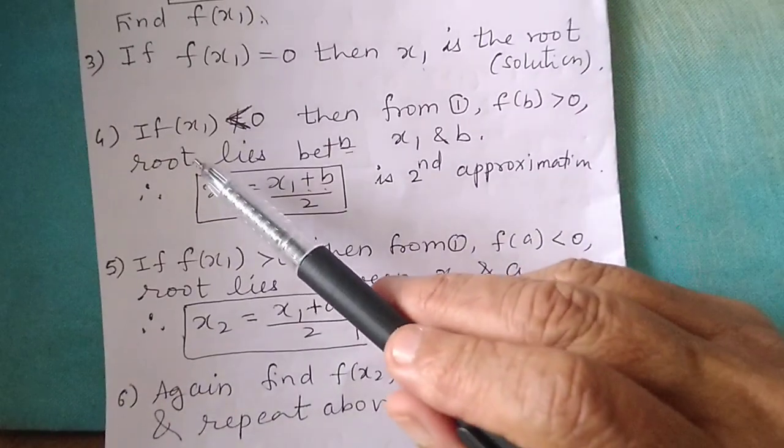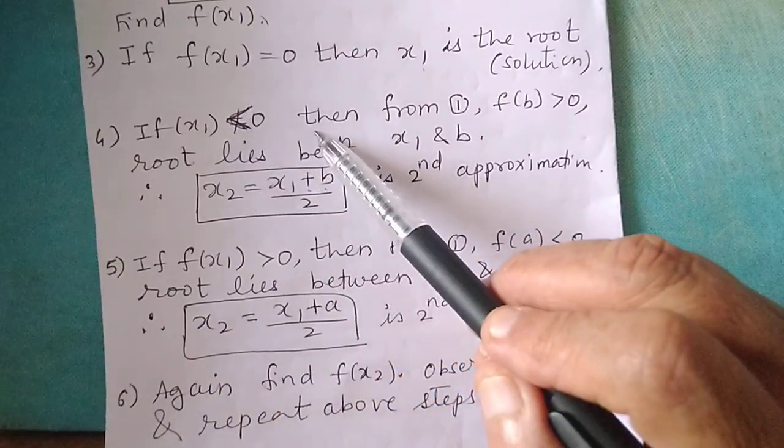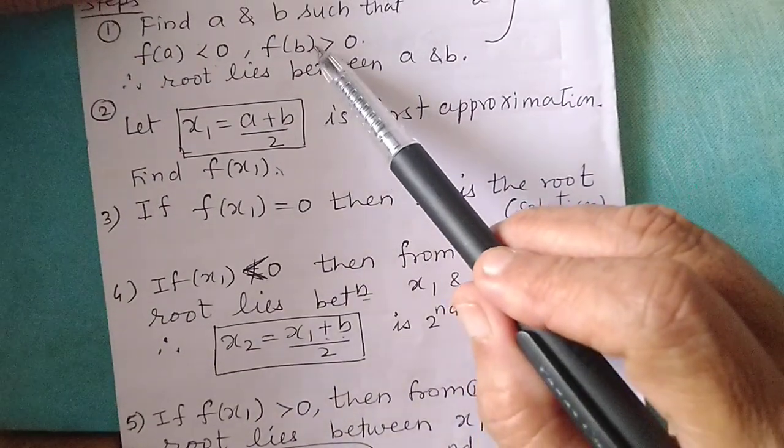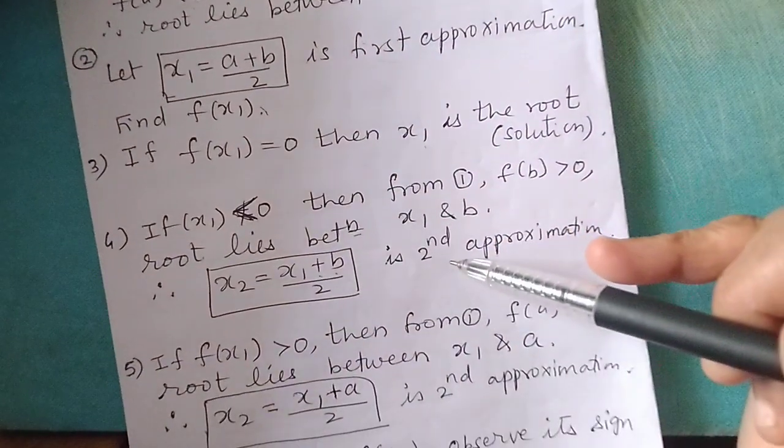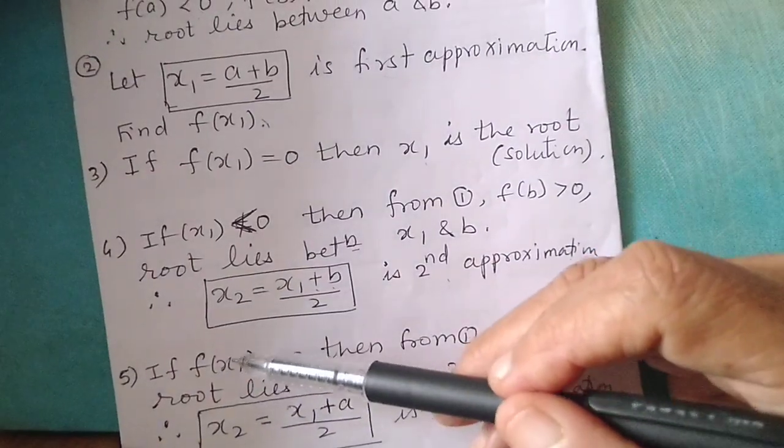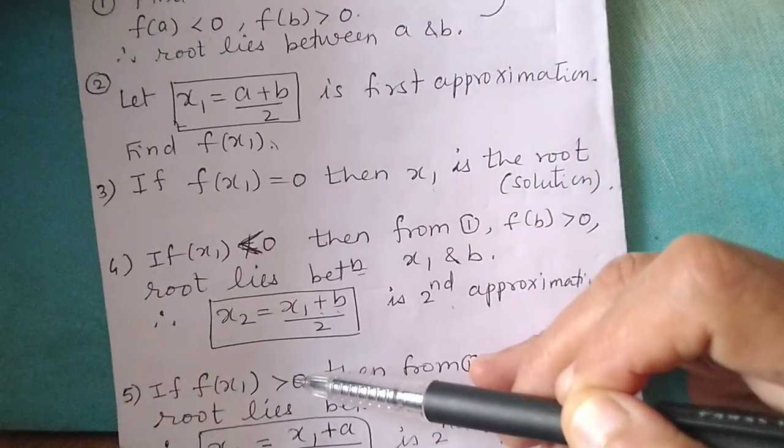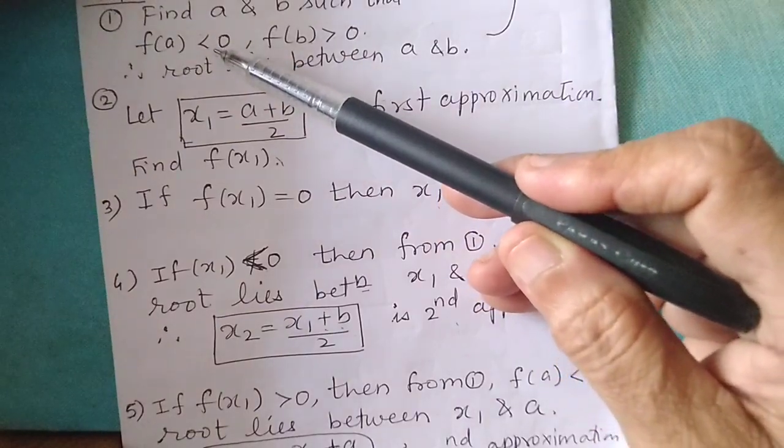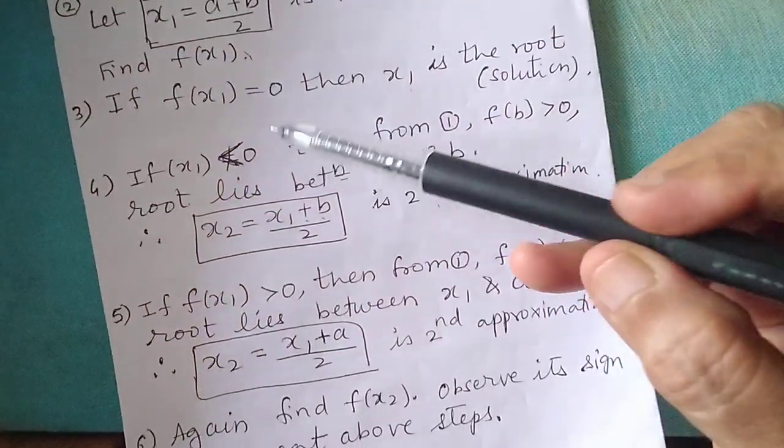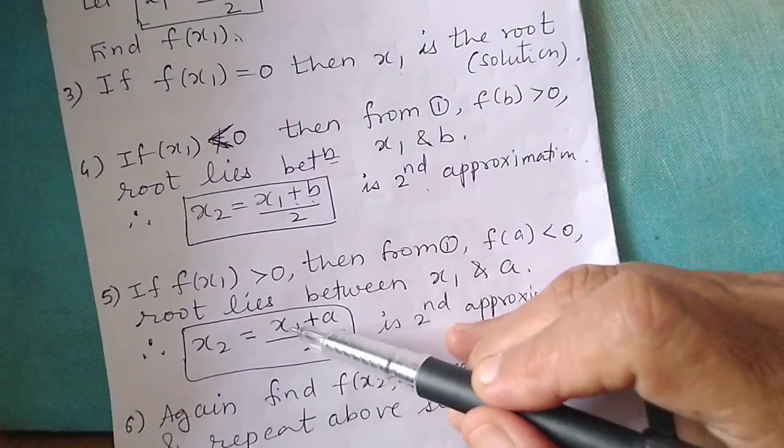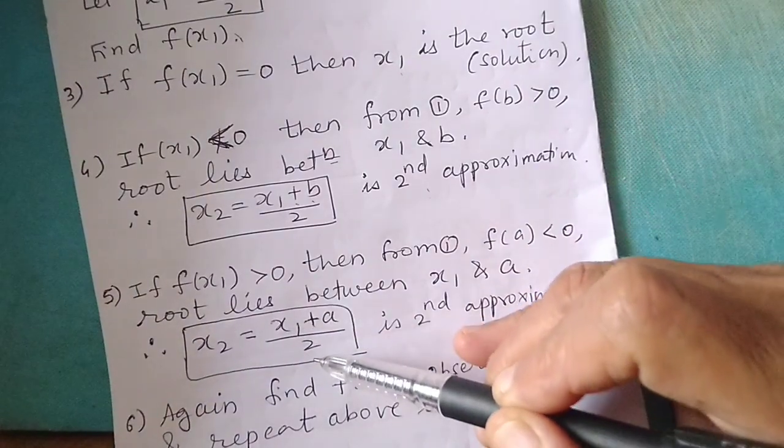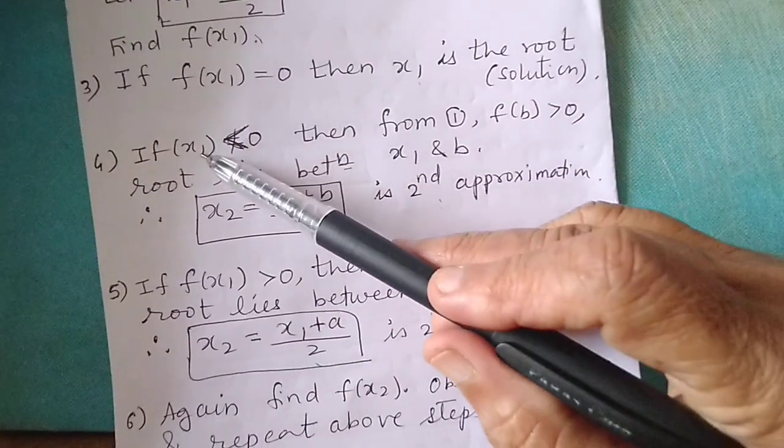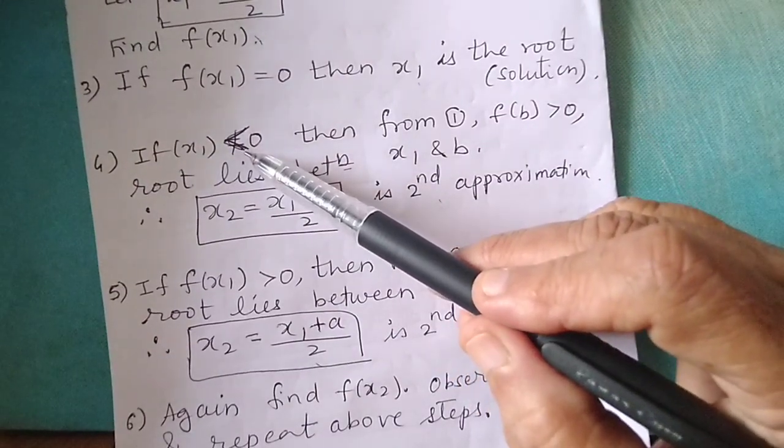There are two options. If f of x1 is negative, then the root will lie between x1 and b. But if f of x1 is positive, then the root lies where f is negative. If f of a is less than 0, in that case the average will be x1 plus a upon 2 for the second approximation.